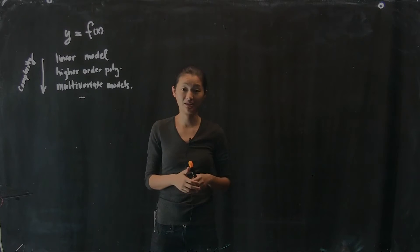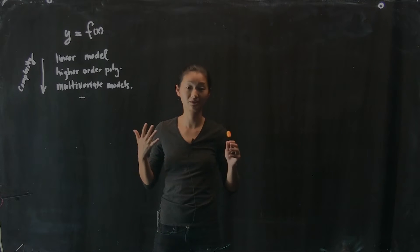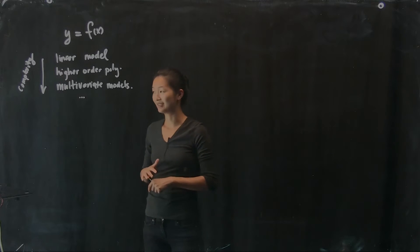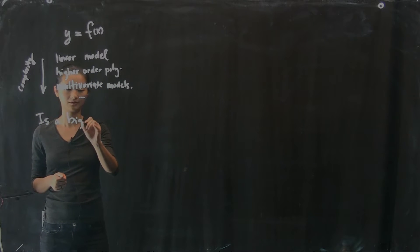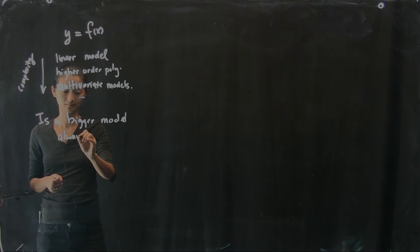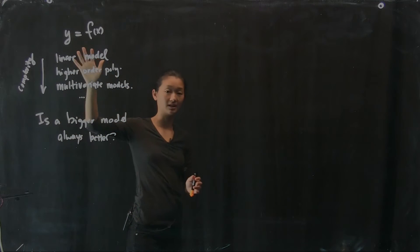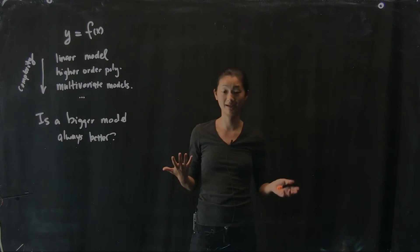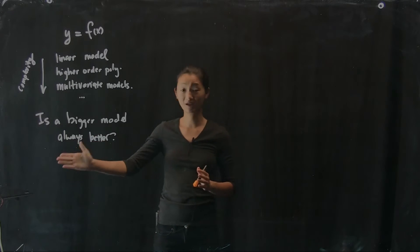As you get more and more models, let's say that you have the same number of parameters as your data points, then you end up with the model that is exactly your data. But that's not really all that useful, right? So the question that we're going to ask in this lecture is, is a bigger model always better? We get this feeling that we can reproduce our data more and more closely as we make our model more and more complicated, but is that always better? And what do we mean by better? What is the good metric for evaluating what's better? So that's the topic of the lecture today.